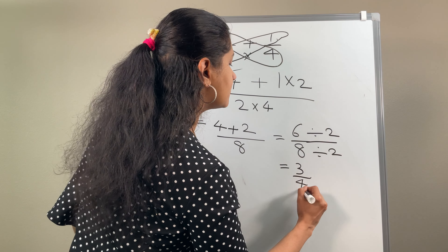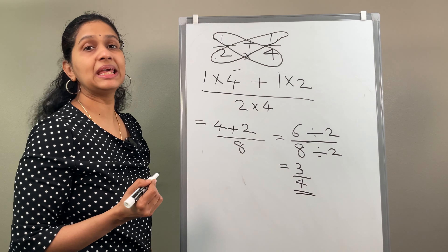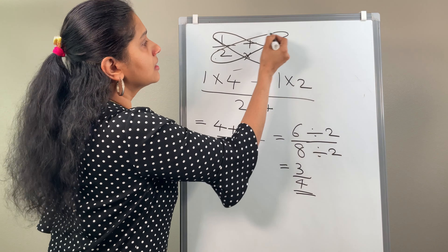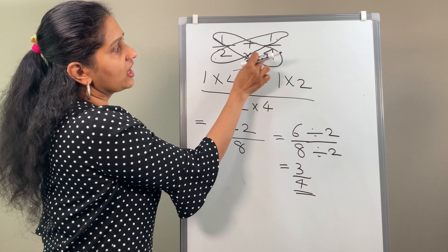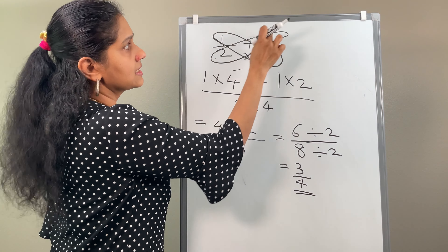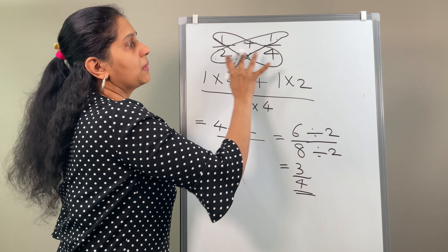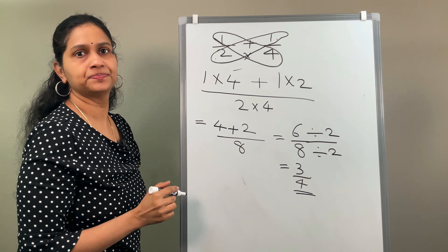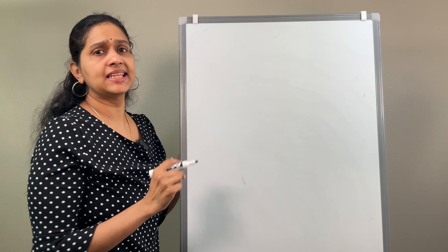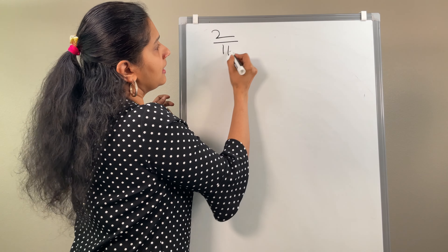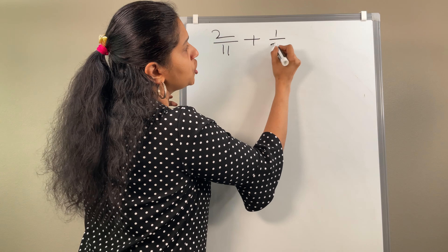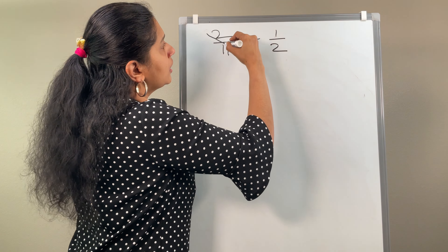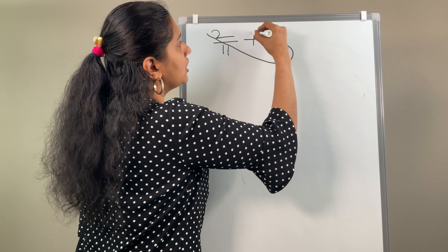That equals 6 by 8. Now you can simplify 6 by 8 because both are divisible by 2. Dividing: 6 divided by 2 is 3, and 8 divided by 2 is 4. So the final answer is 3 by 4. In the butterfly method, you simply draw a circle this way and this way, multiply the numerators with the opposite denominators, and multiply the two denominators together. That gives the final answer.